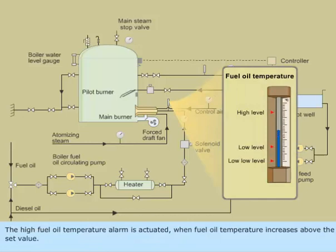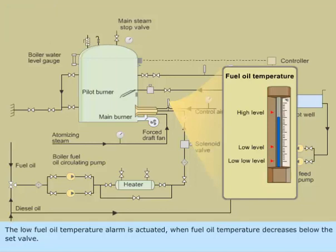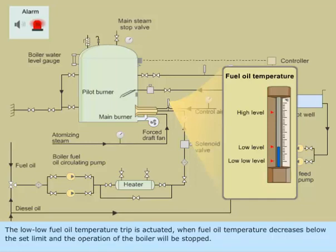The High Fuel Oil Temperature Alarm is activated when fuel oil temperature increases above the set value. The Low Low Low Fuel Oil Temperature Trip is activated when fuel oil temperature decreases below the set limit and the operation of the boiler will be stopped.